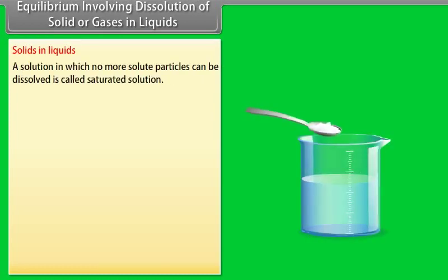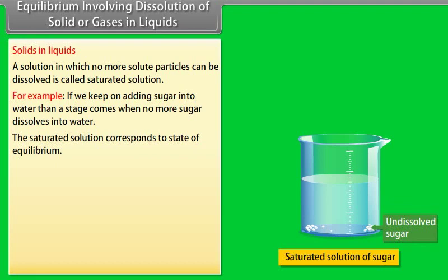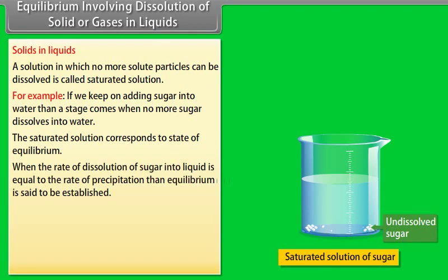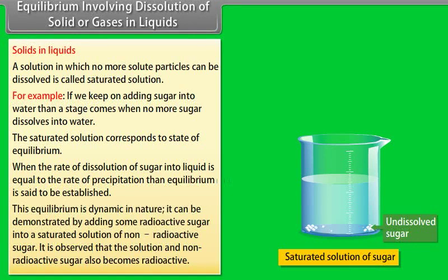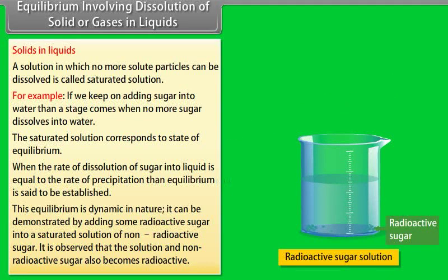Equilibrium involving dissolution of solid or gases in liquids — Solids in Liquids: A solution in which no more solute particles can be dissolved is called a saturated solution. For example, if we keep on adding sugar into water, a stage comes when no more sugar dissolves. The saturated solution corresponds to a state of equilibrium, when the rate of dissolution of sugar into liquid is equal to the rate of precipitation. This equilibrium is dynamic in nature, which can be demonstrated by adding some radioactive sugar into a saturated solution of non-radioactive sugar — the solution and the non-radioactive sugar also become radioactive.